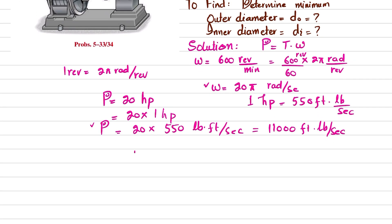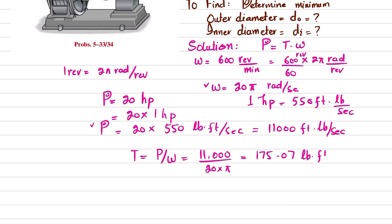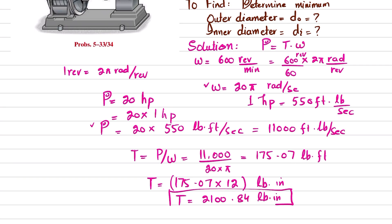Now we can calculate torque. Torque equals power divided by angular speed, so torque equals 11,000 divided by 20π, which gives 175.07 foot-pounds. Converting to inch-pounds: 175.07 multiplied by 12 equals 2100.84 pound-inches.